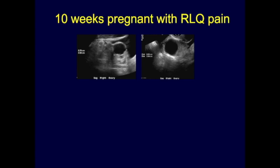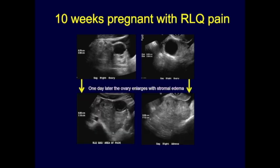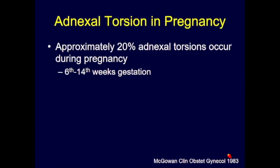A 10-week pregnant patient with right lower quadrant pain had a slightly enlarged ovary with possible increased stromal echogenicity. She improved with medication but worsened the next day; repeat imaging showed the ovary had markedly enlarged with marked stromal edema — right adnexal torsion. There is a slightly higher incidence of adnexal torsion during pregnancy due to lax ligaments, typically occurring between the 6th and 14th weeks of gestation.